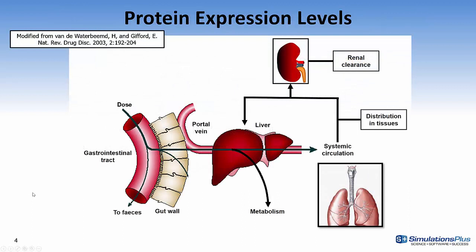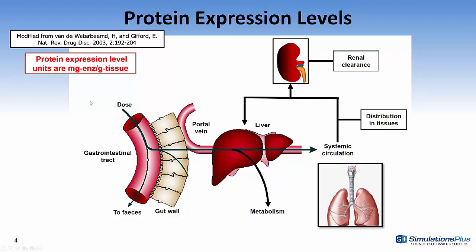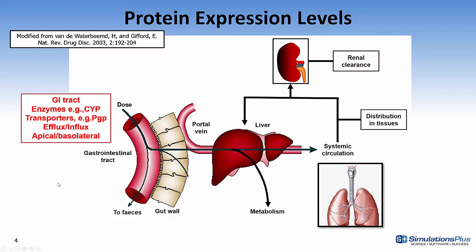This next slide is an overview of protein expression levels. We'll discuss the various tissues — for example, in the GI tract, the liver, lung, and kidneys. The protein levels are expressed in milligrams per enzyme per gram of tissue. The GI tract contains several enzymes such as CYPs and UGTs along the GI tract. It also contains transporters such as PGP, and when we define these transporters, they can be either efflux or influx transporters, and they can be on the apical or basolateral side.